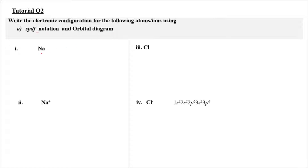In order for us to write the SPDF notation, we need to know the number of protons first. The sodium atom will have 11 protons, and in a neutral state it will have 11 electrons as well. So in writing the SPDF notation we're going to write it as 1s2, 2s2, 2p6, and then 3s1.